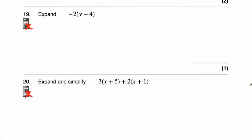Question number nineteen asks us to expand −2(y − 4). We need to multiply what's inside the brackets by negative two. Negative two times y would be negative 2y. And then negative two times negative four — negative times a negative is a positive — and two times four is eight. The answer is −2y + 8.